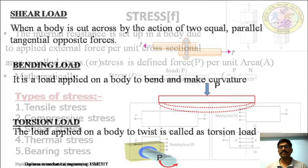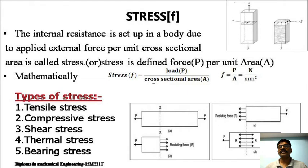Stress — this is very important. Whenever a body is loaded, it gets deformed to a certain limit. This deformation is resisted by the internal forces set up in the body. The internal resistance set up in the body due to the applied external force per unit cross-section is called stress. Stress is defined as force per unit area. Mathematically, stress (F) is equal to load applied (P) divided by cross-sectional area (A). We take load applied P because the resisting force R equals the load applied P when the body is in equilibrium.